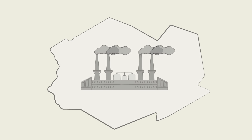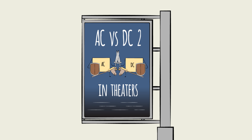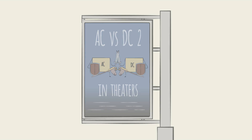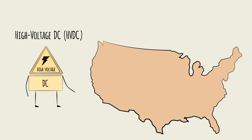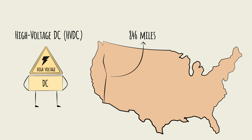However, today DC has made a comeback. Inventors eventually found a way to easily change the DC voltage. High-voltage DC, or HVDC transmission, actually has lower electricity loss than AC. So some of the world's longest transmission lines — like the 846-mile line between Washington and Southern California in the U.S. — use DC electricity.